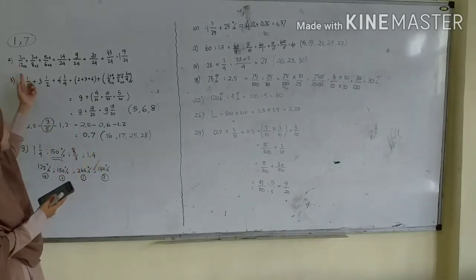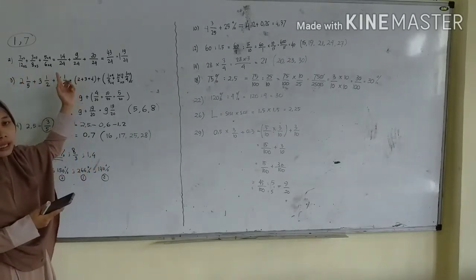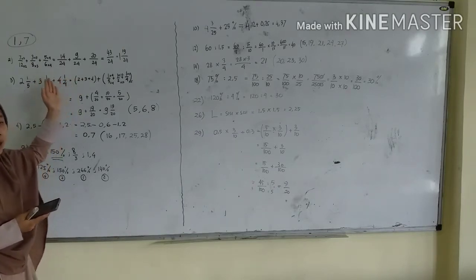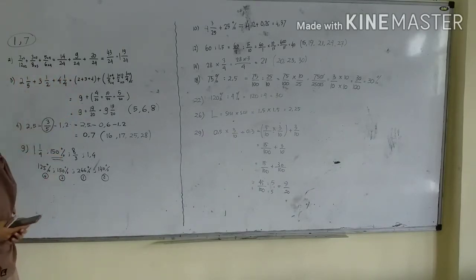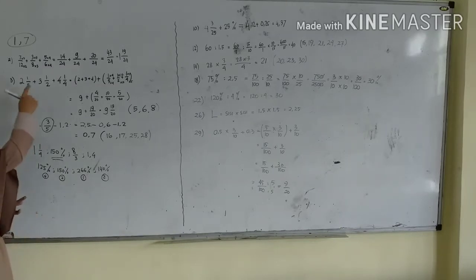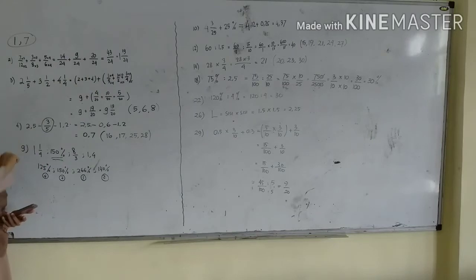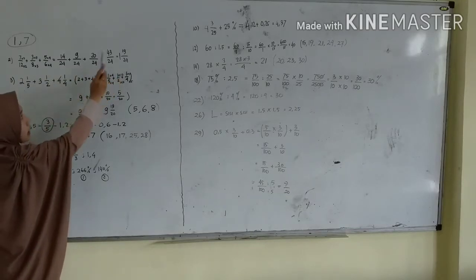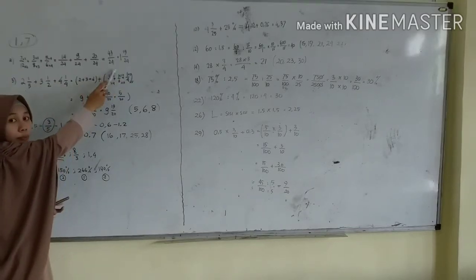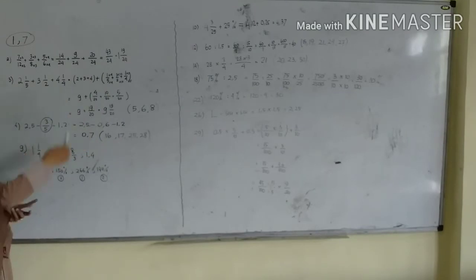Langsung ke nomor 2. Nomor 2 itu adalah penjumlahan pecahan tetapi pecahannya berbeda penyebut. Ingat, kalau penyebutnya berbeda maka harus disamakan dulu penyebutnya. Ya, kalau ini harus dijadikan per 24 karena peribatan yang paling kecil di dalam 24. Kalau sudah disamakan penyebutnya hasilnya adalah 43 per 24, bisa disederhanakan menjadi pecahan campuran menjadi 1 19 per 24.